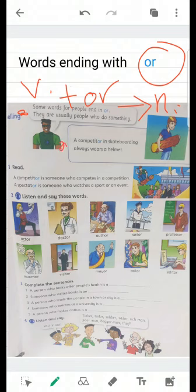Look at this sentence. A competitor. Competitor is a noun meaning someone who competes. The verb is compete, meaning to compete. We added the suffix OR so it became competitor. In skateboarding, a competitor always wears a helmet.